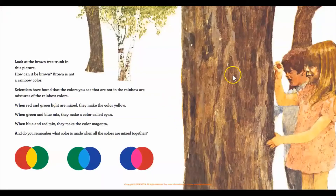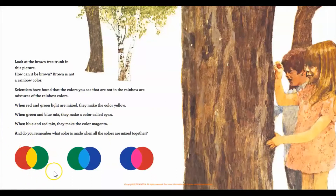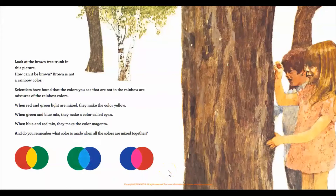Look at the brown tree trunk in this picture. How can it be brown? Brown is not a rainbow color. Scientists have found that the colors you see that are not in the rainbow are mixtures of the rainbow colors. When red and green light are mixed, they make the color yellow. When green and blue mix, they make a color called cyan. When blue and red mix, they make the color magenta.